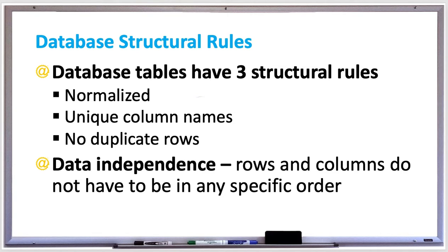Relational databases follow the data independence rule, where rows and columns do not have to be in any specific order. The order of the data has no effect on the results of the database query, and with data independence, DBAs or database administrators can optimize the database for fast insertion and retrieval of data without affecting the database query results.